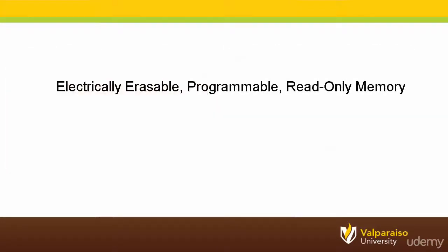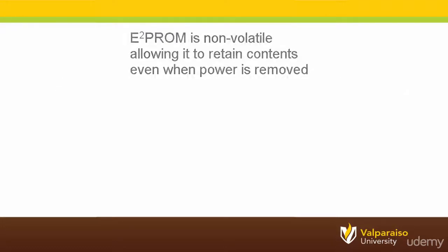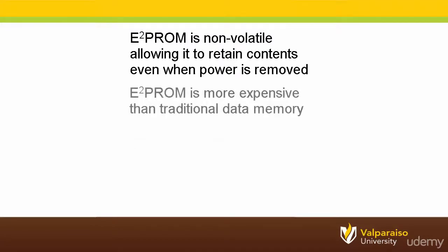The next data memory type is electrically erasable programmable read-only memory, also called EEPROM, E-squared PROM, or simply E-squared. While the name may seem like an oxymoron, E-squared PROM is a very popular technology for data memory because it is non-volatile. When a microcontroller loses power, E-squared PROM will retain its contents. However, this technology is much more expensive than traditional RAM data memory.